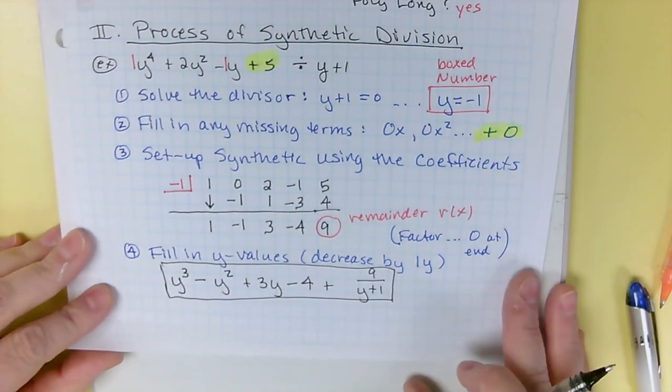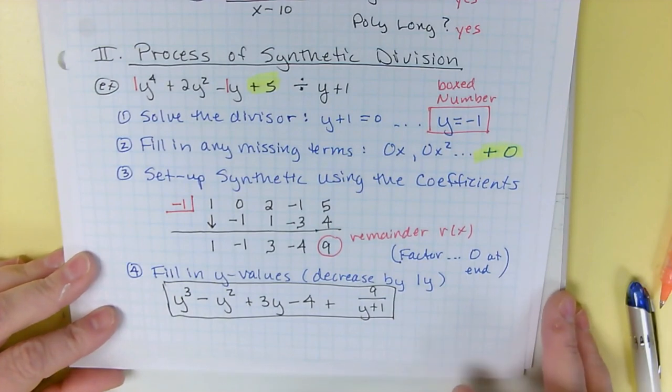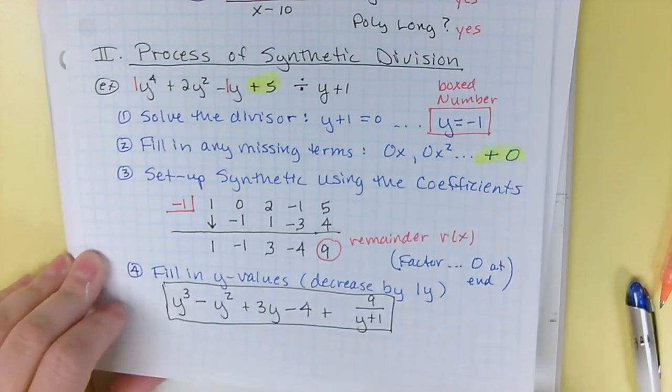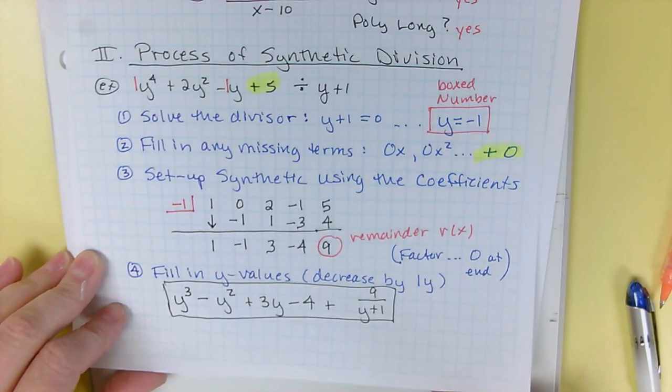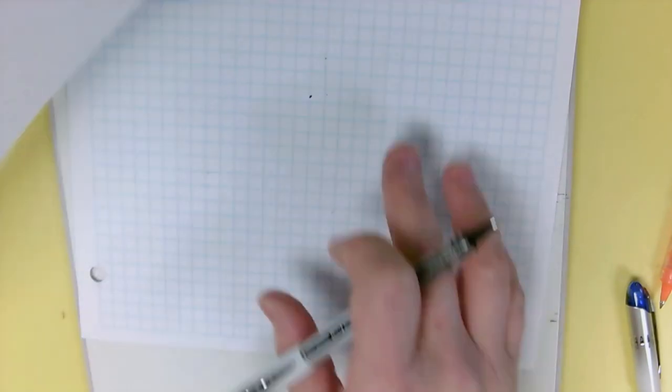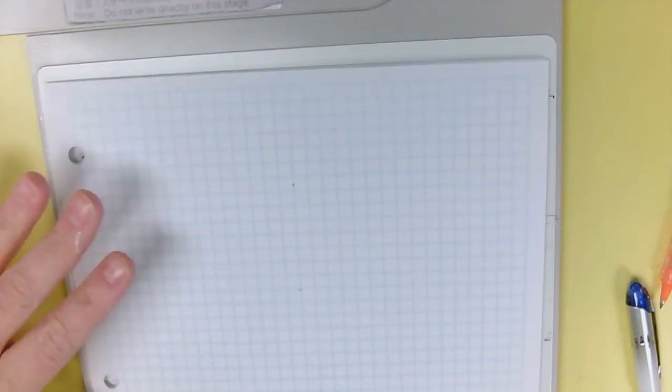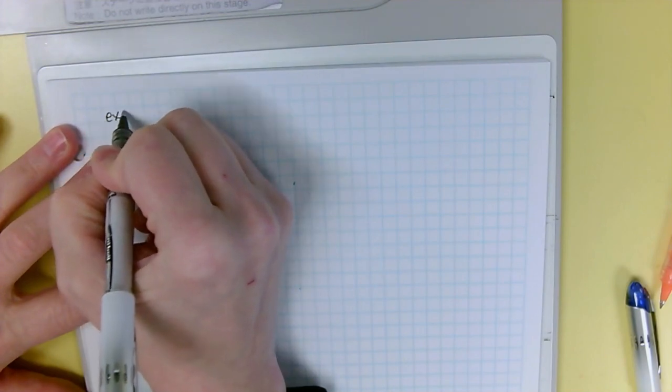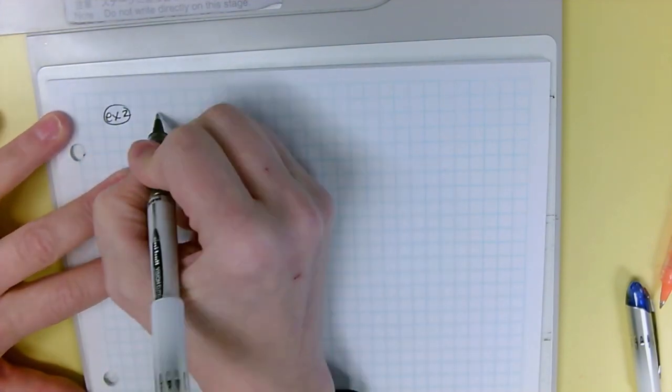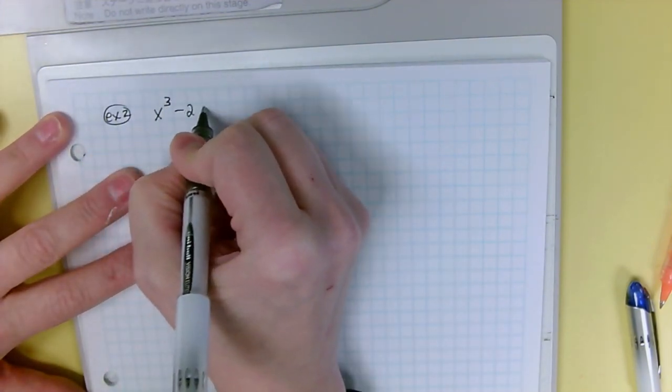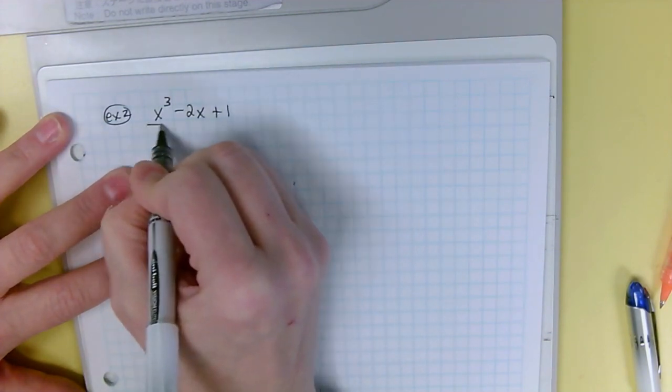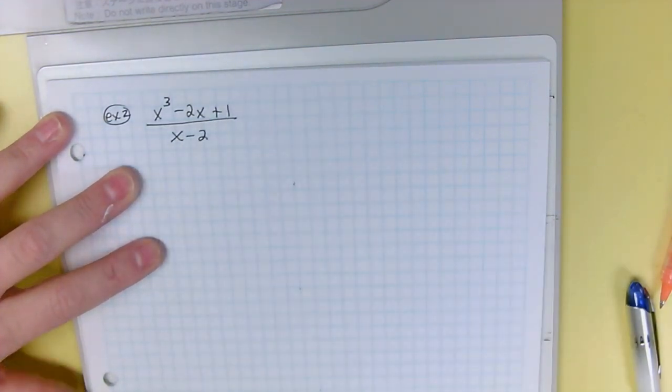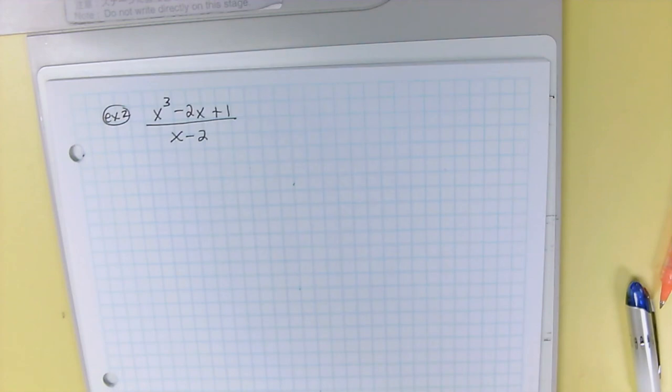Any questions about this process? Okay, let's do another example. We did one. Let's do another one. Let's say you've got x³ - 2x + 1 over x - 2. You're supposed to divide.